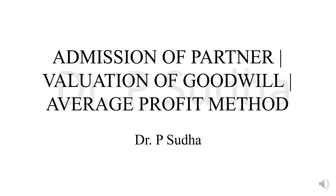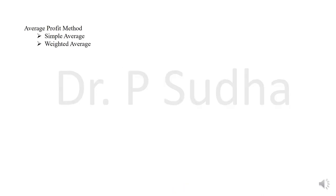In this video, we shall discuss how to calculate the valuation of goodwill under the average profit method. For calculation of goodwill, there are three methods: one is the average profit method, the second is the super profit method, and the third is the capitalization method.